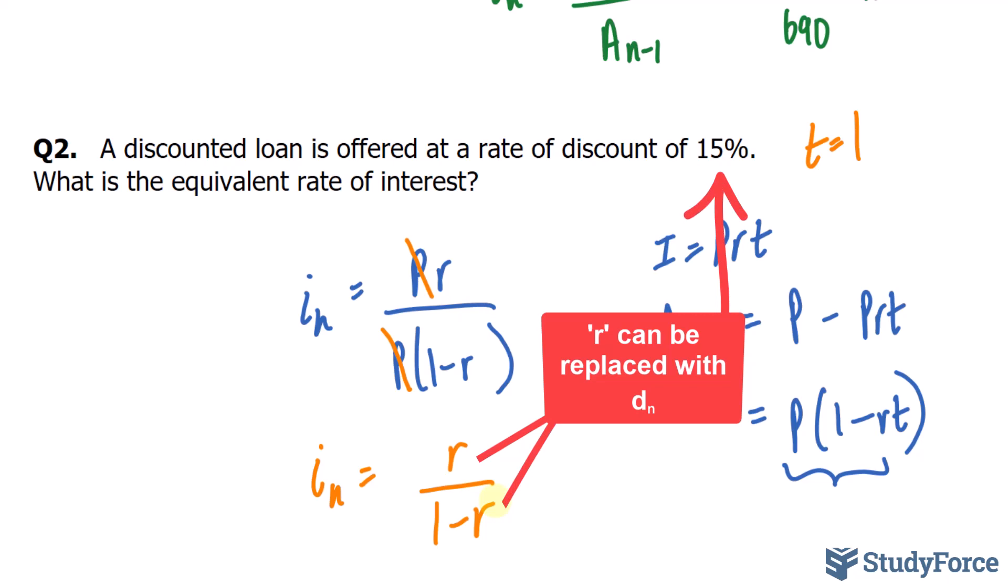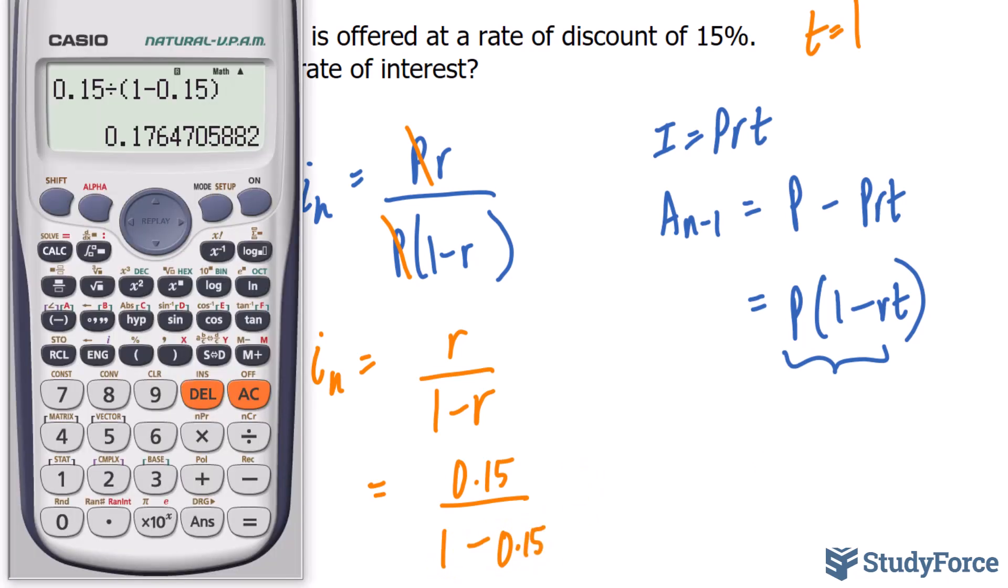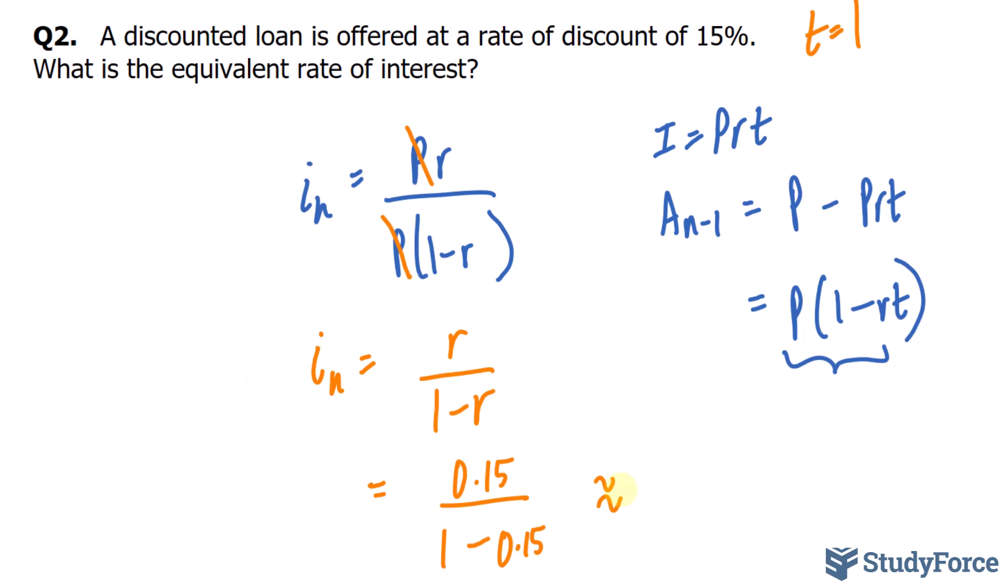That right there is the generic formula that can be used to calculate the effective rate of interest. So, substituting 0.15 into this R and that R, we get 0.15 over 1 take away 0.15. Putting this into our calculator, we end up with a value that is roughly, for our effective rate of interest, 0.1764. Of course, multiplying this by 100 gives us 17.6%. This calculation tells us that we don't necessarily need a principal value to calculate the effective rate of interest.